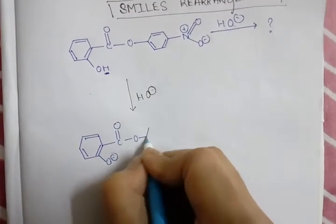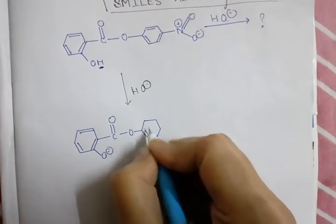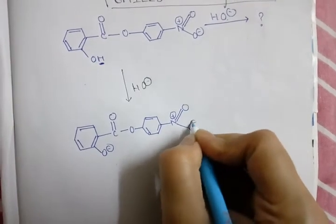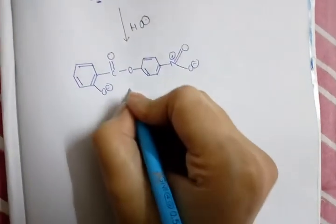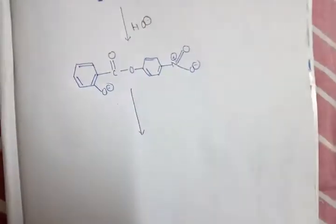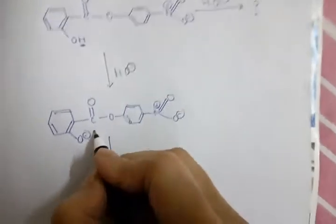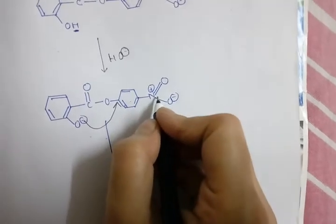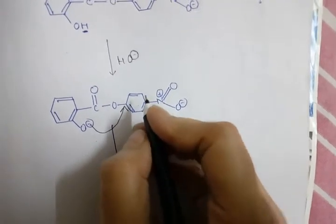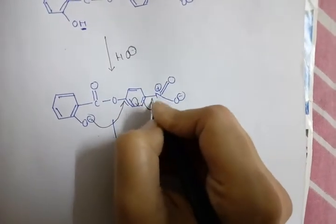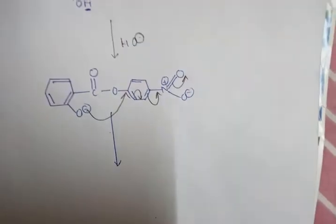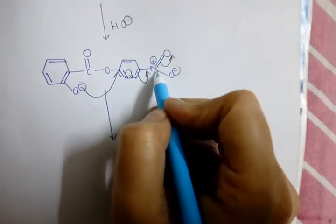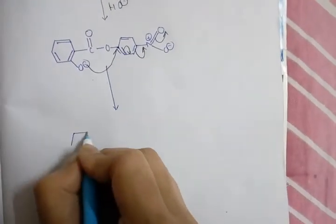This O negative acts as a nucleophile. As it is not an external nucleophile, it is an internal nucleophile which will attack to the para position of this benzene nucleus, as an electron withdrawing group is present with this benzene. Then electrophilicity of this carbon increases due to this electron withdrawing group.